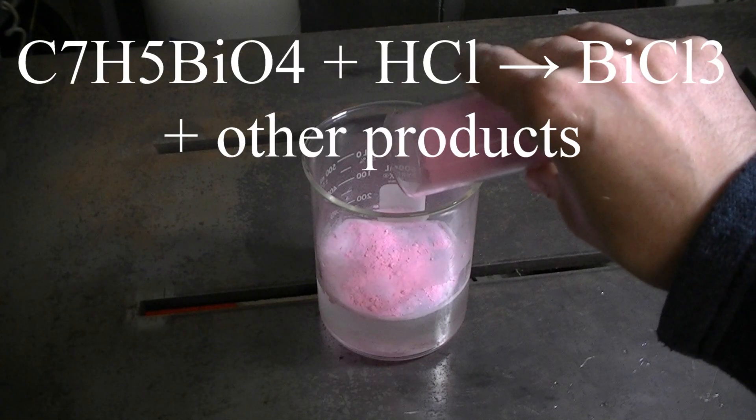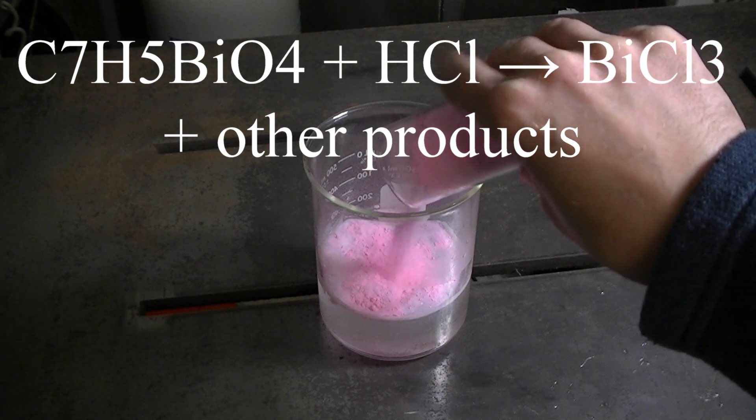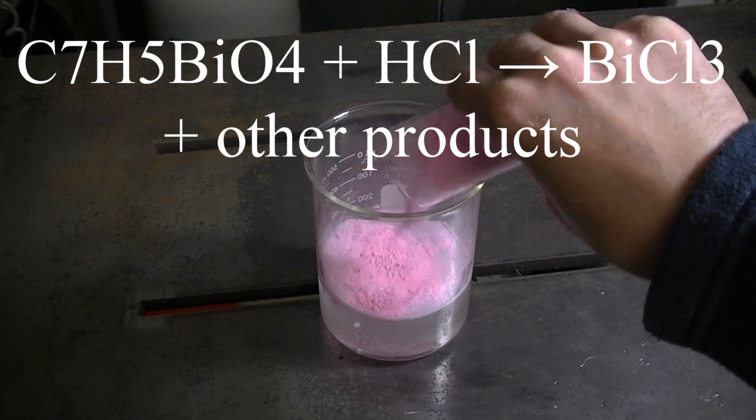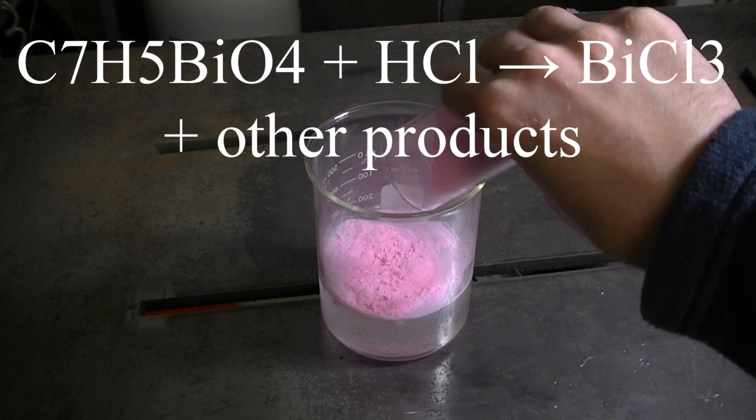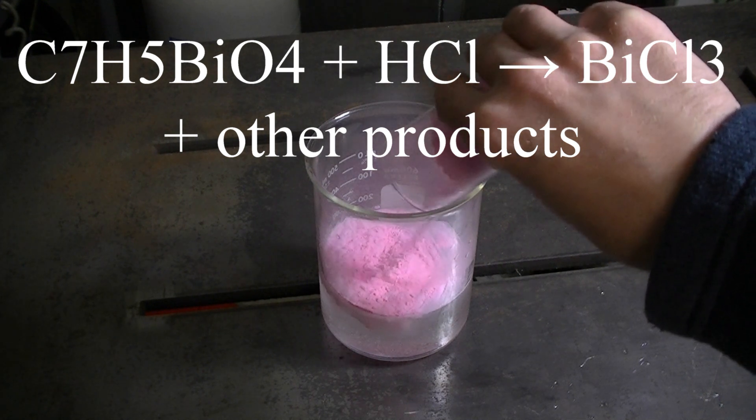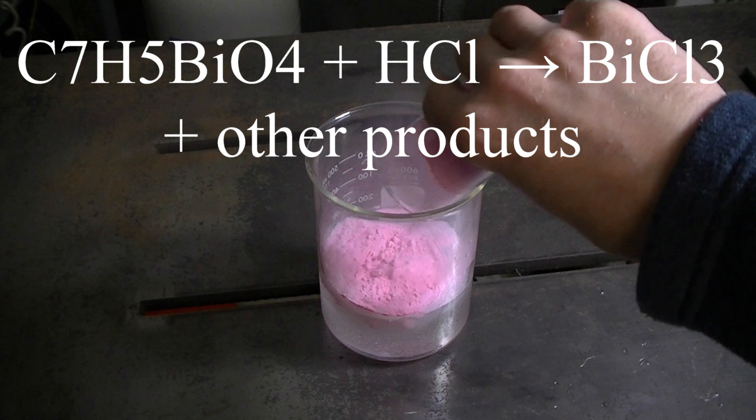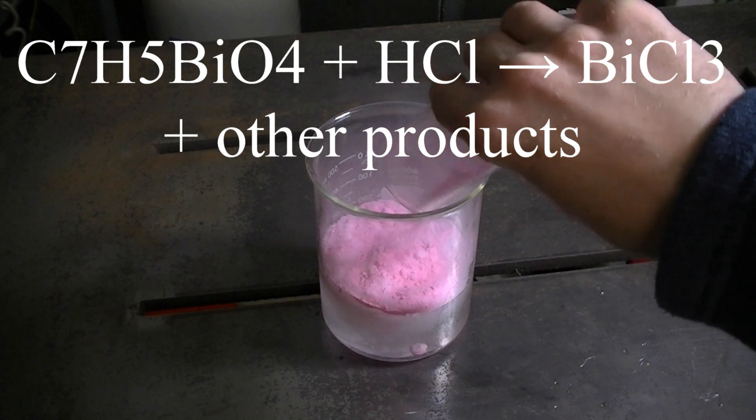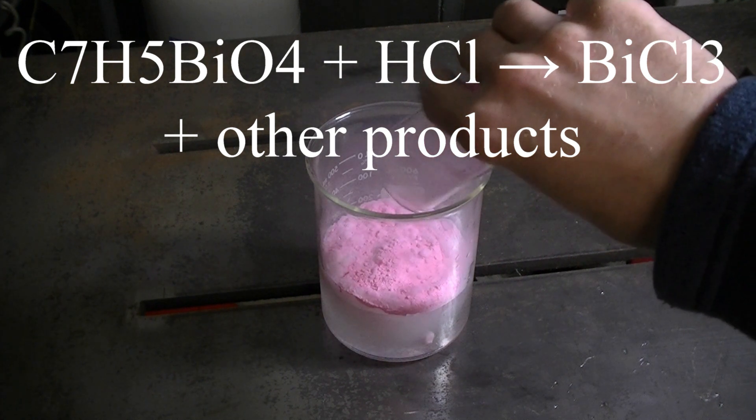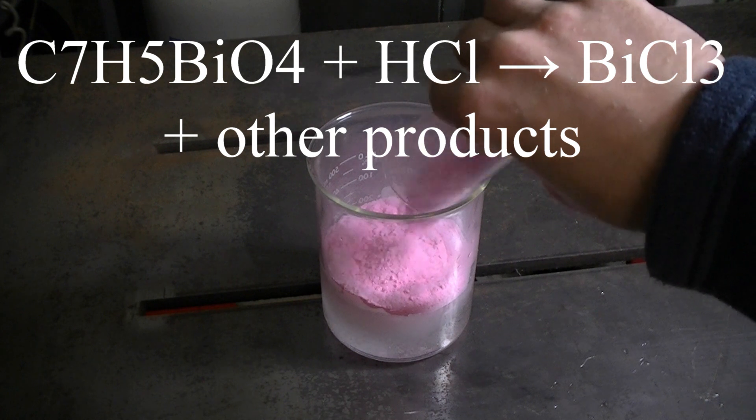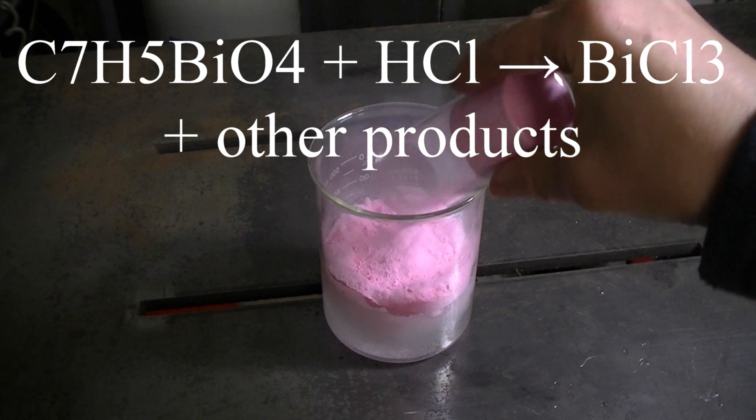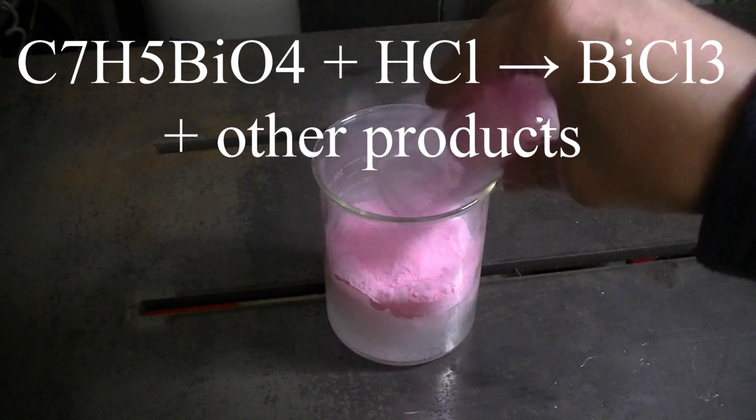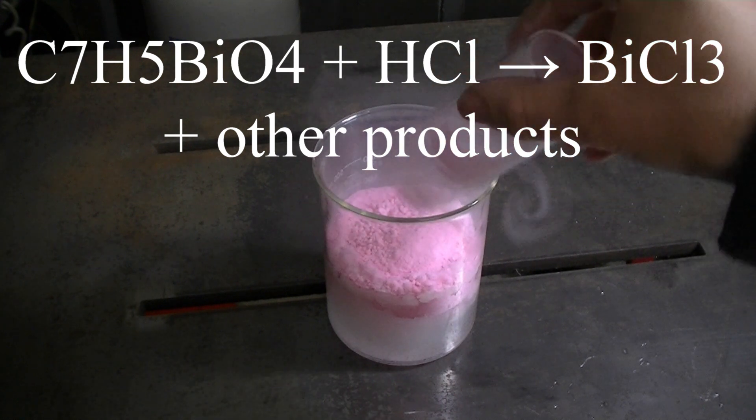The reaction that should take place, the bismuth contained within the bismuth subsalicylate, should react with the hydrochloric acid forming bismuth chloride, which is aqueous in the liquid. We're also forming some other byproducts. I can't be exactly sure what they are, but starch looks like one of them. Starch is typically added to tablets to bulk them up, because the active ingredient is typically only a very small fraction.